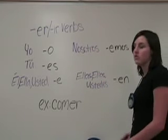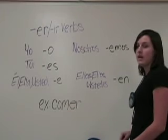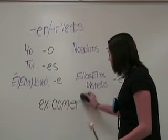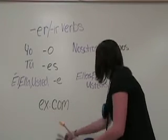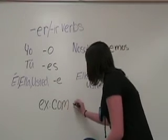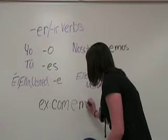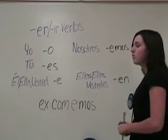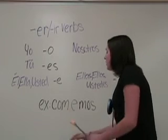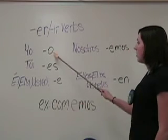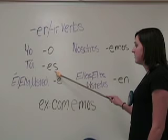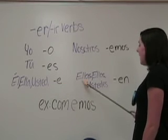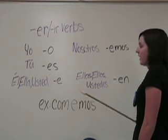Let's do an example using comer, which means to eat. If you wanted to conjugate comer in the nosotros form, you drop off the ER and add amos to the end. So it would be nosotros comemos. Going through all the endings, it would be: yo como, tú comes, él, ella, usted come, nosotros comemos, and ellas, ellos, ustedes comen.